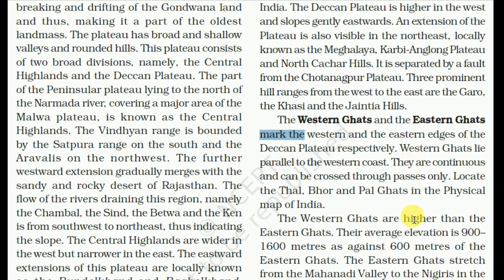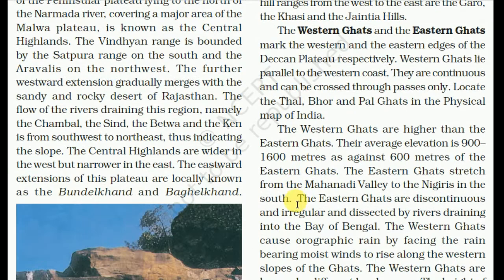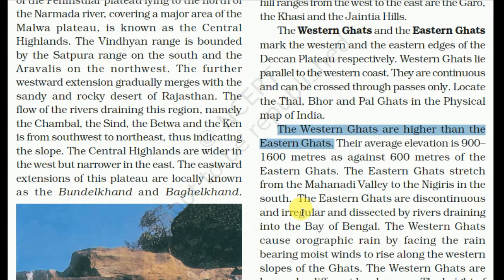The Western Ghats and Eastern Ghats mark the western and eastern edges of the Deccan Plateau respectively. The Western Ghats lie parallel to the western coast. They are continuous and can be crossed through passes only — locate the Thal, Bhore, and Palghad passes in the physical map of India. The Western Ghats are higher than the Eastern Ghats, with an average elevation of 900 to 1,600 meters, compared to about 600 meters for the Eastern Ghats.